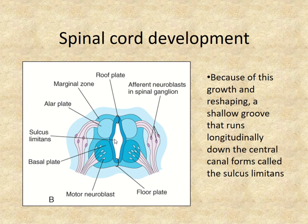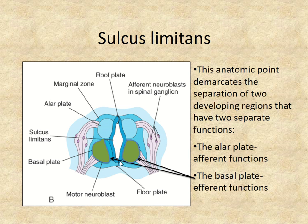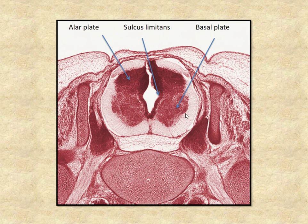The sulcus limitans is actually going to separate the spinal cord. The condensation of neurons on the dorsal side is called the alar plate, which is on the dorsal side of the sulcus limitans and has afferent functions. The neurons on the ventral side of the sulcus limitans form the basal plate, and those neurons all end up with efferent functions. The basal plate is depicted as the lighter area here with efferent functions, and here's the alar plate. This sulcus limitans goes all the way up to the brain stem.